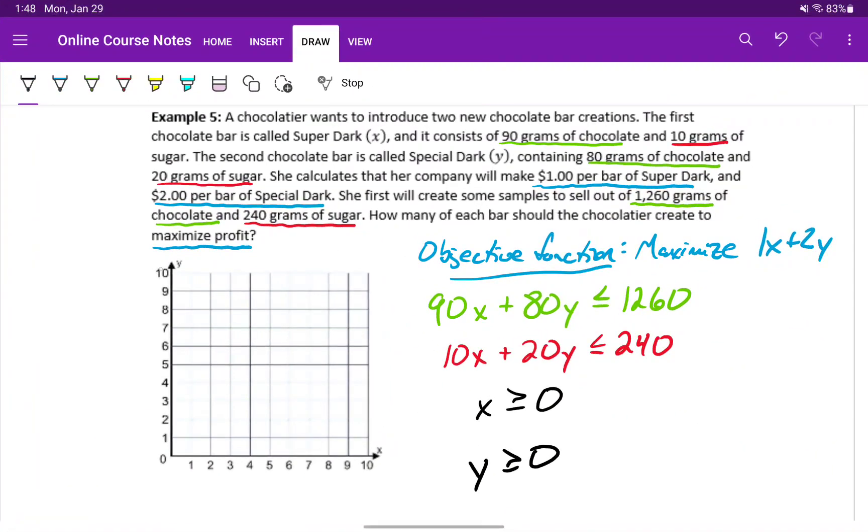But this means that we have our points, our xy coordinate pairs to make our bounded region at 0, 0, 0, 12, 6, 9, and 14, 0.